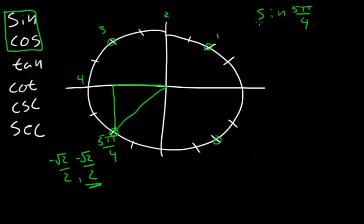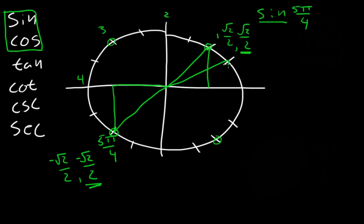Whenever somebody's asking you for sine, they're always asking for the y value of the coordinate. So if they ask for sine of π/4, that coordinate is √2/2, √2/2 — you want the y value, which is √2/2. And if we wanted sine of π/6, the coordinates there are x = √3/2 and y = 1/2. So the sine of π/6 is just 1/2. It's that simple.